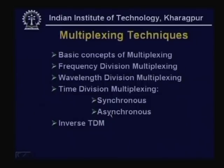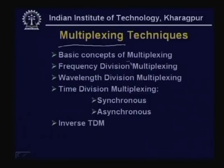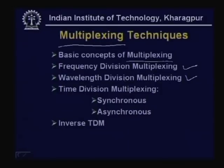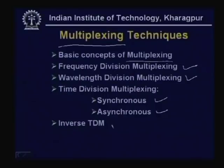Whenever the bandwidth of the medium is very high, it is possible to send several signals simultaneously using multiplexing. We shall discuss the basic concepts of multiplexing. There are different forms: Frequency Division Multiplexing (FDM), Wavelength Division Multiplexing (WDM) — which are essentially the same thing represented in two different ways — and Time Division Multiplexing (TDM). TDM has two forms: synchronous TDM and asynchronous TDM. Nowadays another technique called inverse TDM is also being used, and we shall discuss all these topics in detail.